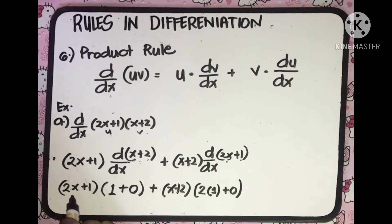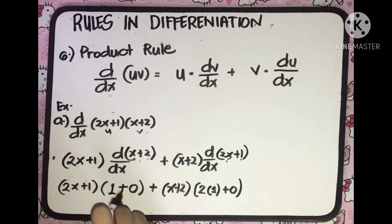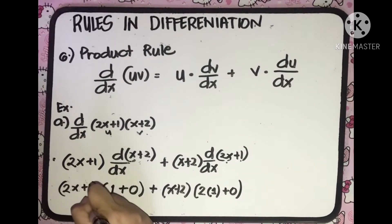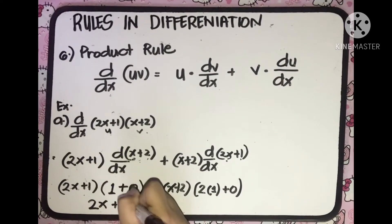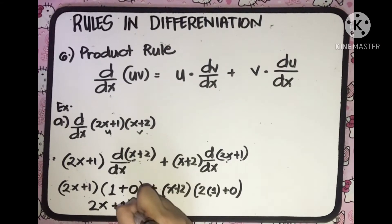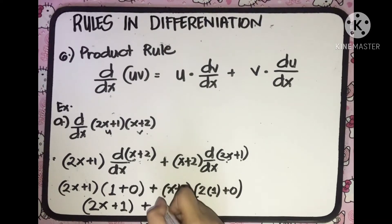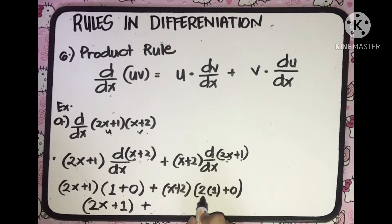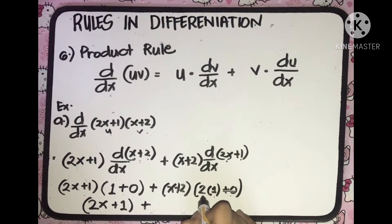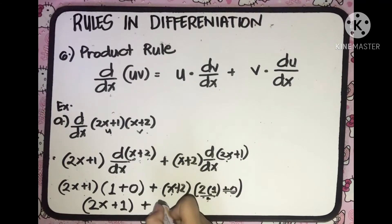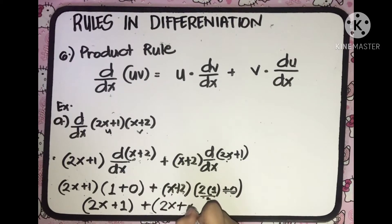Simplifying: 2x plus 1, multiplied by 1 plus 0, equals 2x plus 1. Then plus x plus 2, and on the second factor we have 2 multiplied by 1 plus 0, so 2 times 1 equals 2. Distributing: 2 multiplied by x equals 2x, plus 2 multiplied by 2 equals 4.